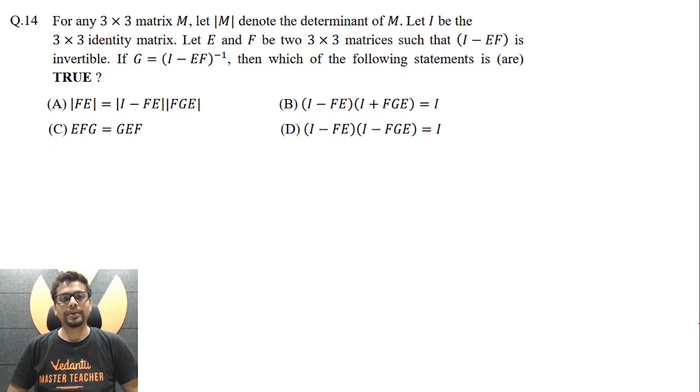For any 3 by 3 matrix M, let |M| denote the determinant of M. Let I be the 3 by 3 identity matrix. Let E and F be two 3 by 3 matrices such that (I - EF) is invertible and (I - EF)^(-1) is G. Then which of the following statements is or are true?